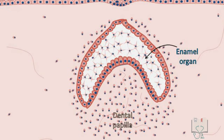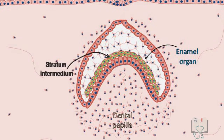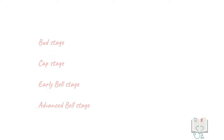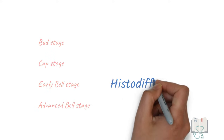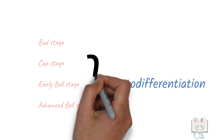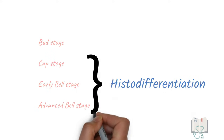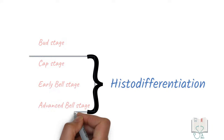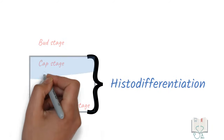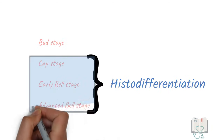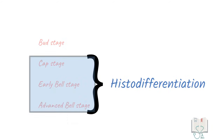Not only ameloblasts and odontoblasts, but other cells also show differentiation. In the bud stage, the central cells transform into star-shaped stellate reticulum for protection of the inner enamel epithelium. In the early bell stage, the stratum intermedium cells develop, which help in enamel deposition. So histodifferentiation starts in the cap stage, continues in the early bell stage, and into the advanced bell stage with differentiation of ameloblasts and odontoblasts.